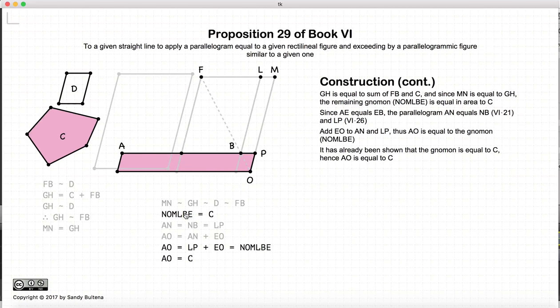And we know from before that the NOMN was equal to the area of C. So we have that AO is equal to C.